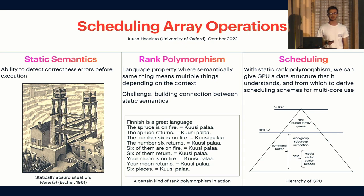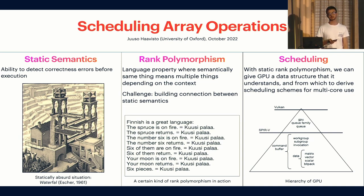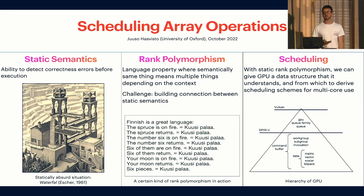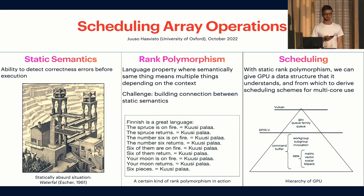Rank polymorphism is a language construct or a property which you can also find in some natural languages. Finnish has it — if you find some phrase which means many different things depending on the context, that's rank polymorphism. But generally this is a bit of a challenge to integrate with the static semantics path. And finally the scheduling part is something that, given these two properties, we can then achieve and make computation go a bit faster.